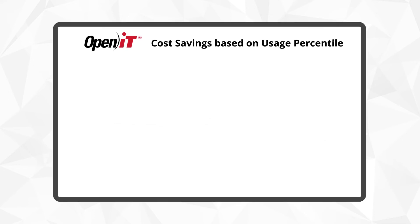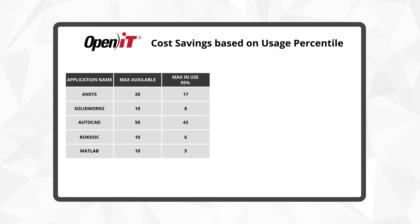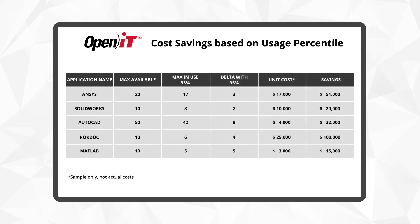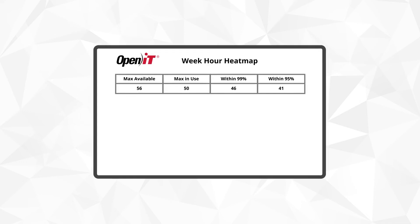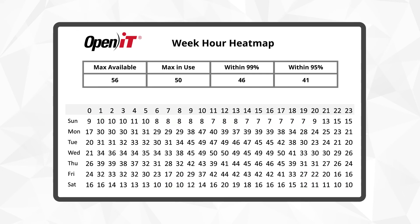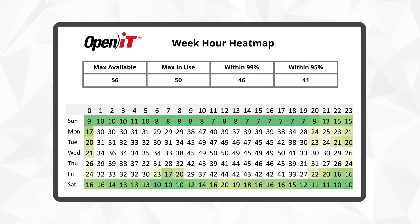How much can you save by using the license efficiency chart? This template can be personalized using your company's cost catalog, and the resulting reports can be used to determine the potential cost savings based on license usage percentile. Heatmaps quickly show you usage trends and denials by the hour, day, week, or month.